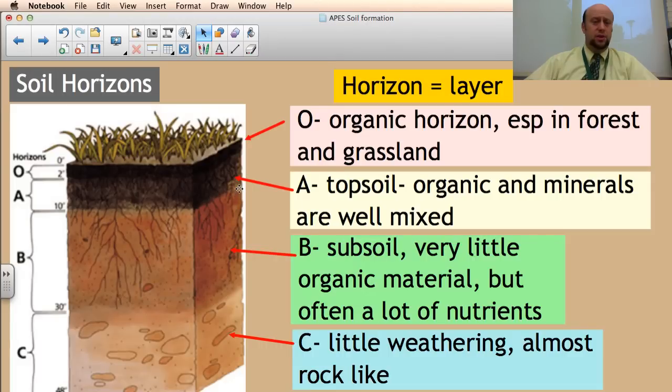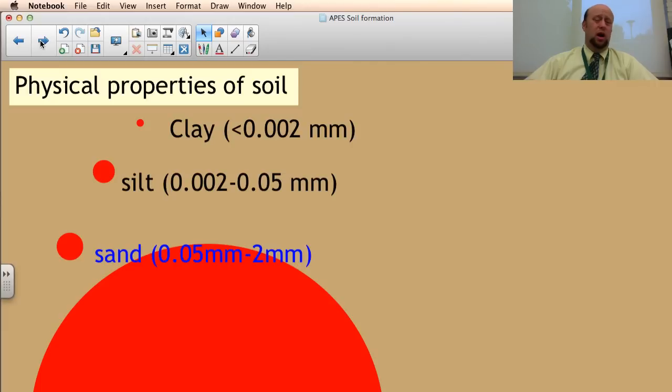One thing I didn't put here in the notes is that right in between the A and the B layer is sometimes what's called an E layer. If you're in a very acid soil, you usually get an acid layer right there that is usually very distinguishable. Typically speaking, we don't really want acidic soils.